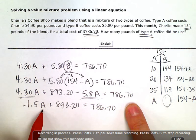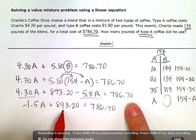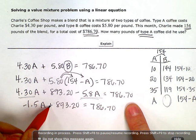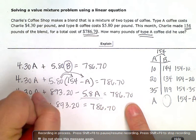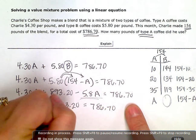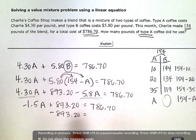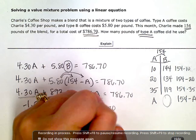Now, I have my variable here. I need to get the variable by itself. So before I deal with the coefficient attached directly to the variable, I want to get rid of any other terms over here. So to undo or zero out this plus 893.20, I'm going to subtract 893.20. But to keep my equation balanced, I have to do it to both sides. So 893.20.